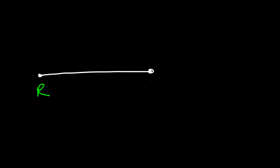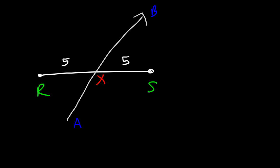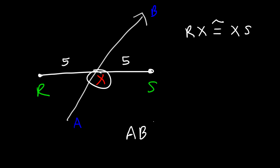Now let's consider another picture. Let's say we have segment RS and there's a ray that passes through RS at point X — let's call this ray AB. Now let's say that RX is 5 and XS is 5. If RX is congruent to XS, that means X is a midpoint of segment RS, and X bisects RS into two congruent segments, which means that ray AB is a segment bisector.